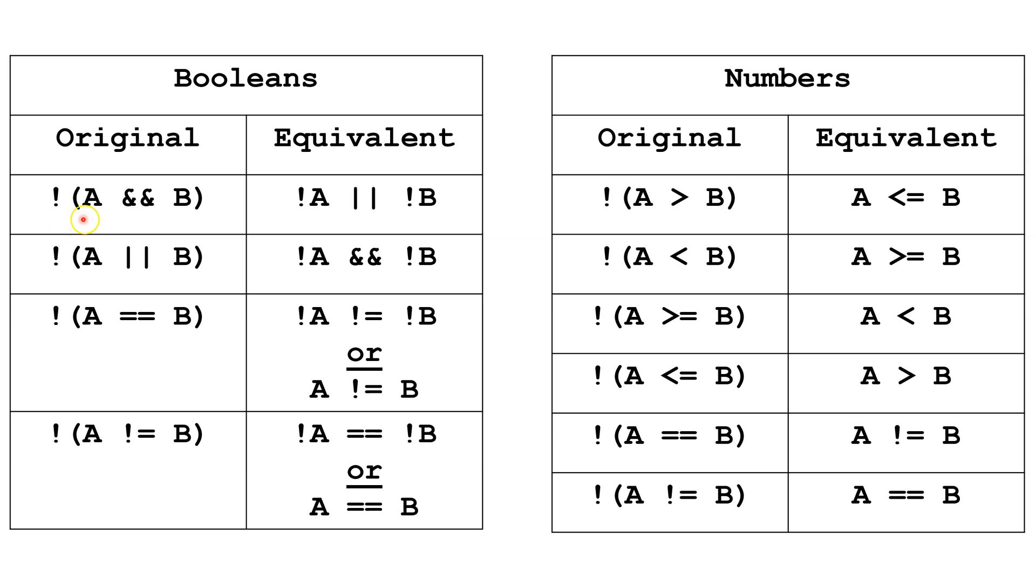Here we see Not A and B. What we're going to do is reverse everything inside the parentheses. We reverse A to Not A. We reverse AND to OR. And we reverse B to Not B. Here, we have Not A or B. So we reverse A to Not A. We reverse OR to AND. And we reverse B to Not B.